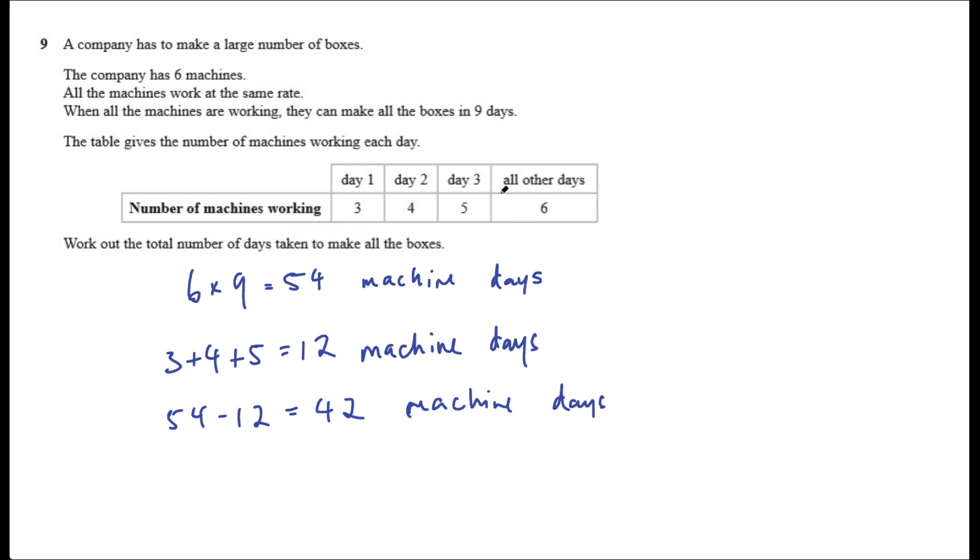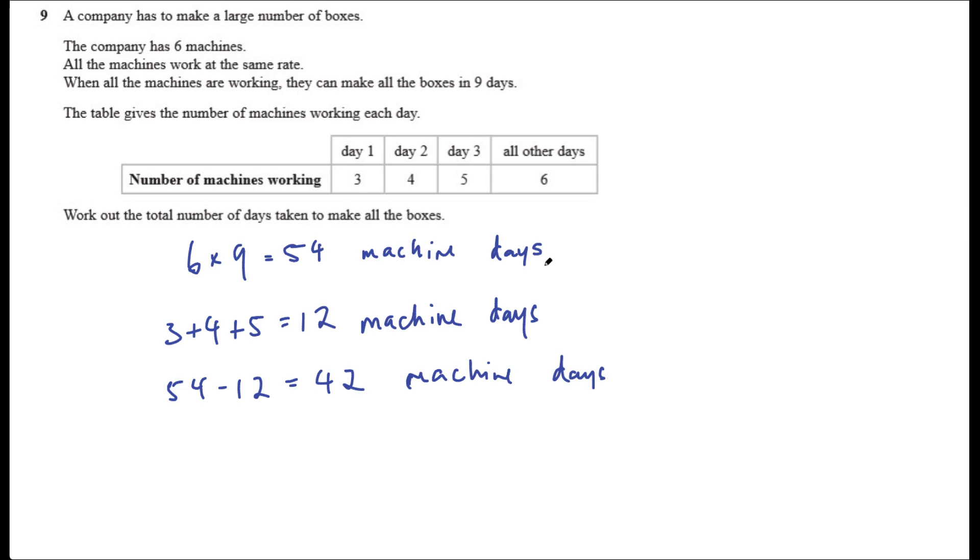And that needs to be completed in the rest of the days where six machines are working. To work that out, well if we've got six machines working each day, that would be six machine days per day. So we need to do 42 divided by 6 to get the number of days. That's going to be seven more days.